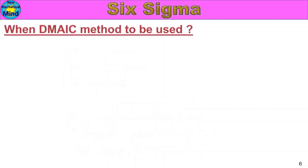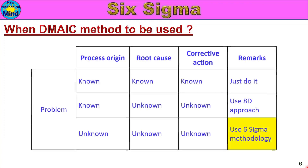Next, we will see when the DMAIC method is to be used. This method is used to solve any problems. We will see a table. In the first column: problem and process origin — what problem exists and what process created it. Then: root cause, corrective action, and finally remarks — where other actions will be mentioned.